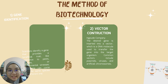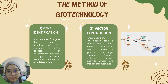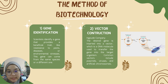Next, the methods of biotechnology. First, gene identification. Scientists identify a gene that provides beneficial traits like resistance to pests, disease, or environmental stress. This gene can come from the same species or a different one.